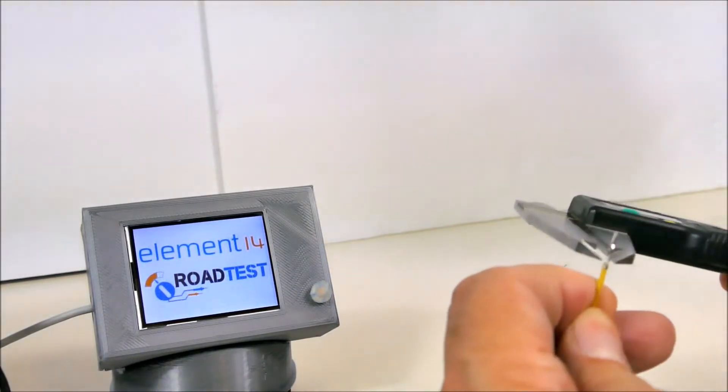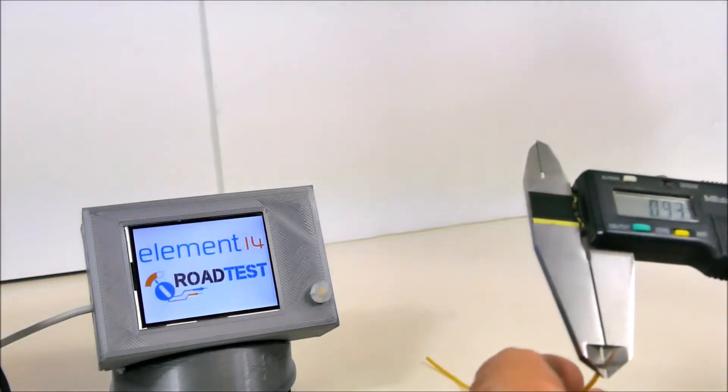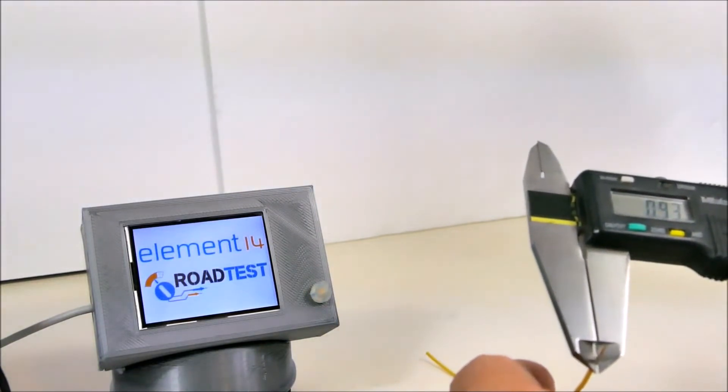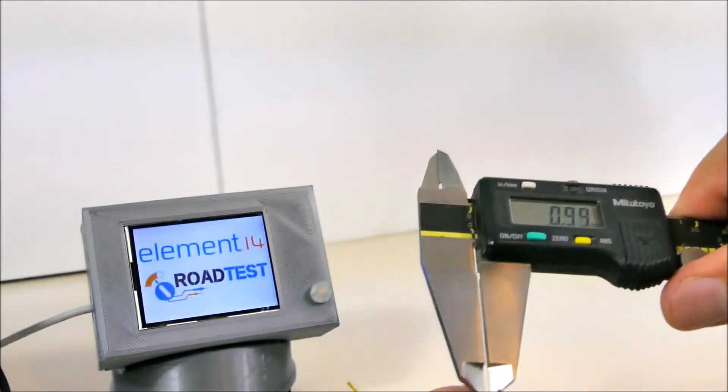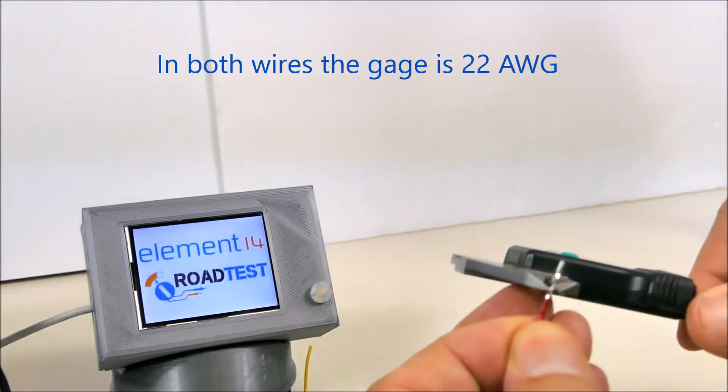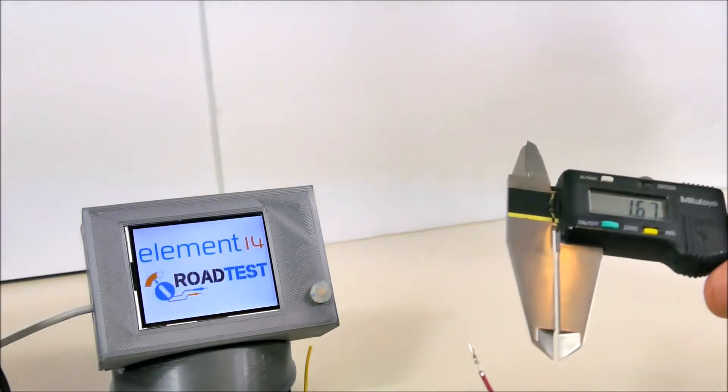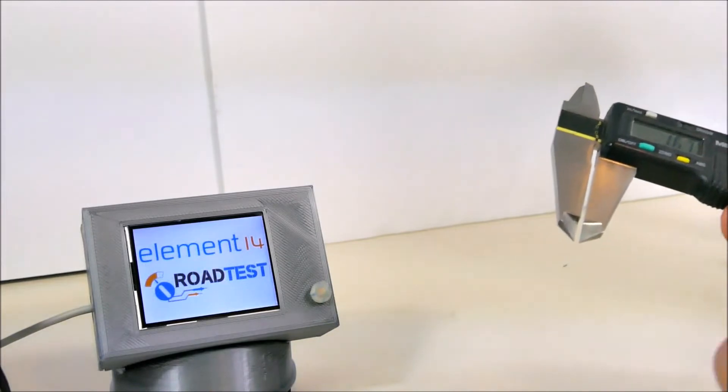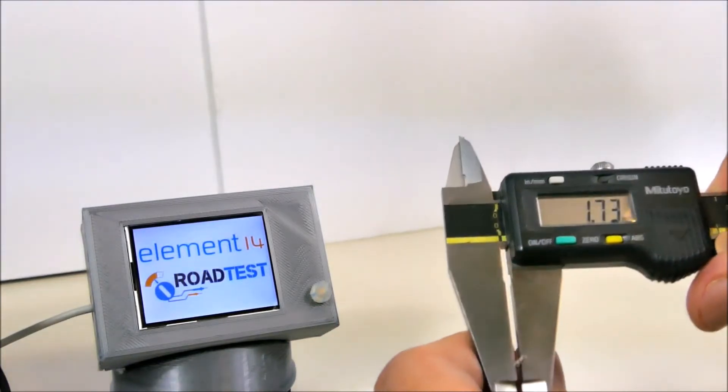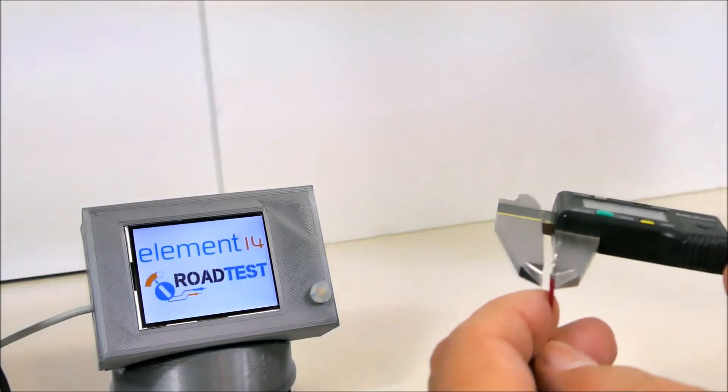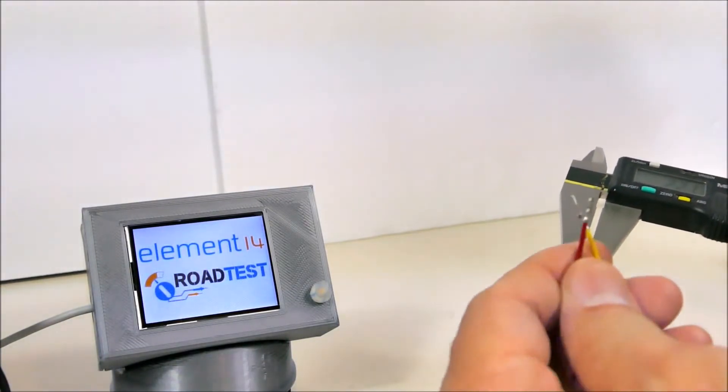Now let's measure the actual crimp distance: 0.93 millimeters. And once you've verified that these crimps are good, you can determine how good they are just by measuring this dimension. So you can see here it's 0.93 millimeters, and let's take a look at the red one, it's 0.9 millimeters, so they're close.